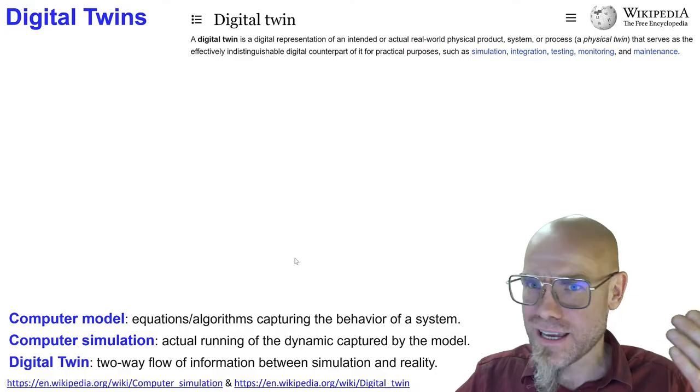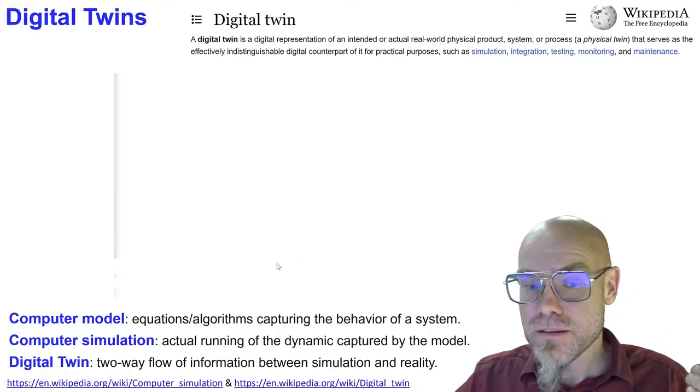While computer models capture the dynamic of the system and computer simulations run it, digital twins include additionally a two-way flow of information between the simulation that runs and reality. So digital twin, call it mirror world.